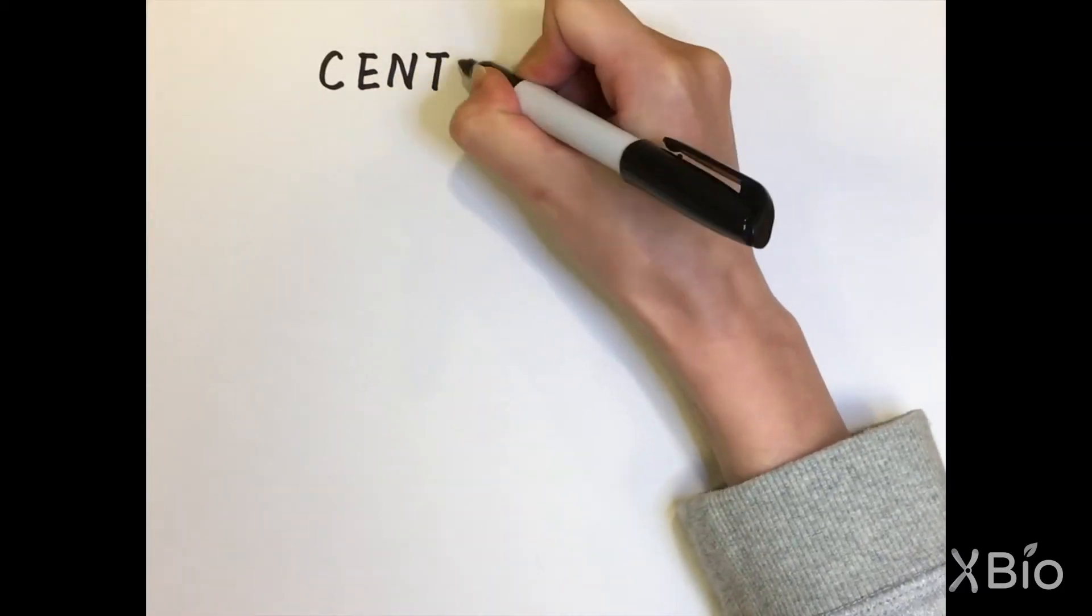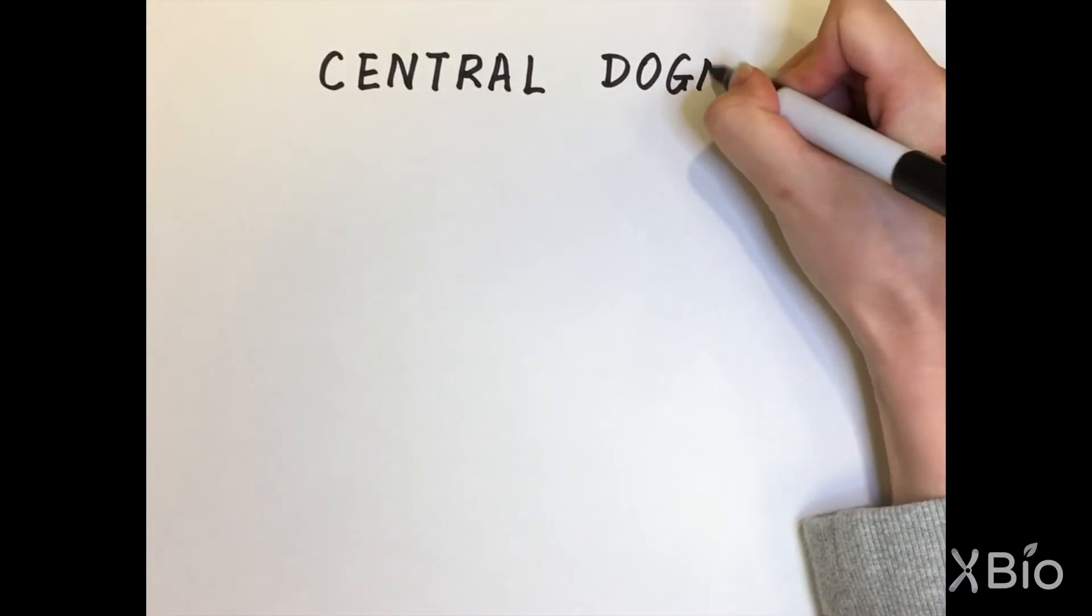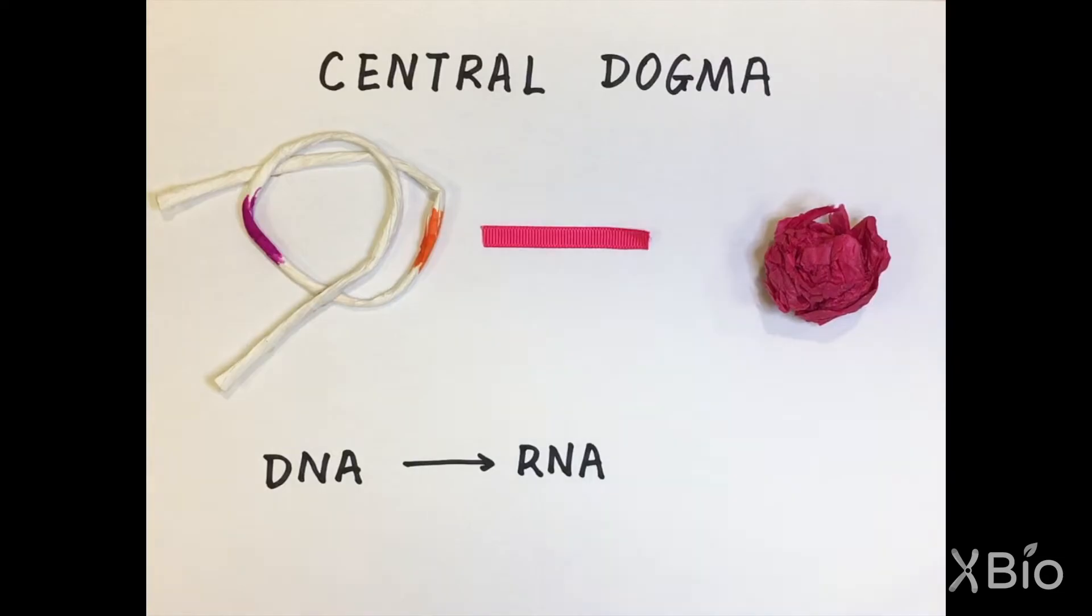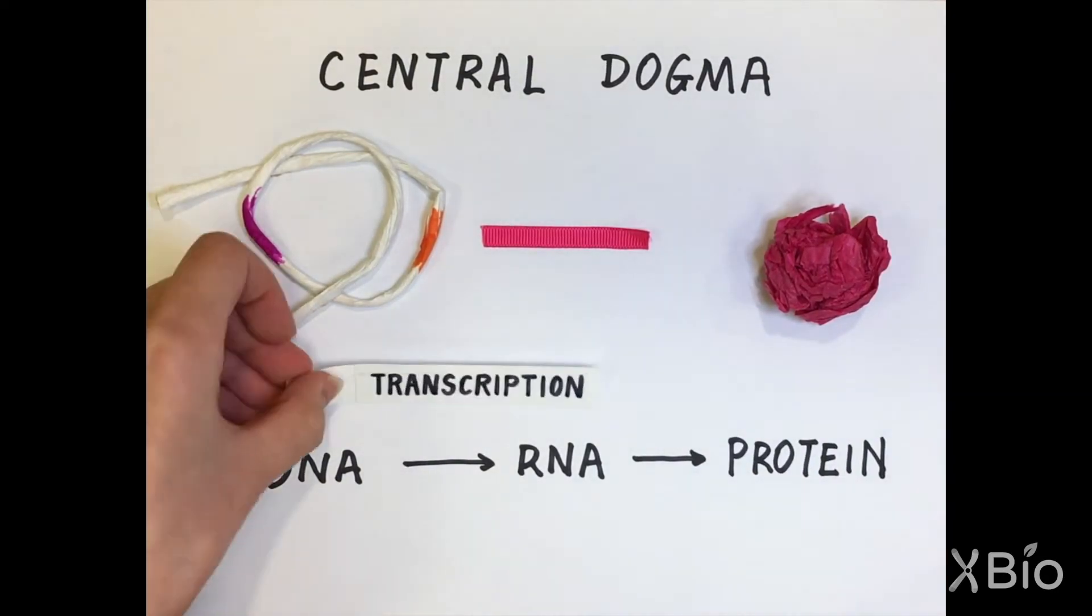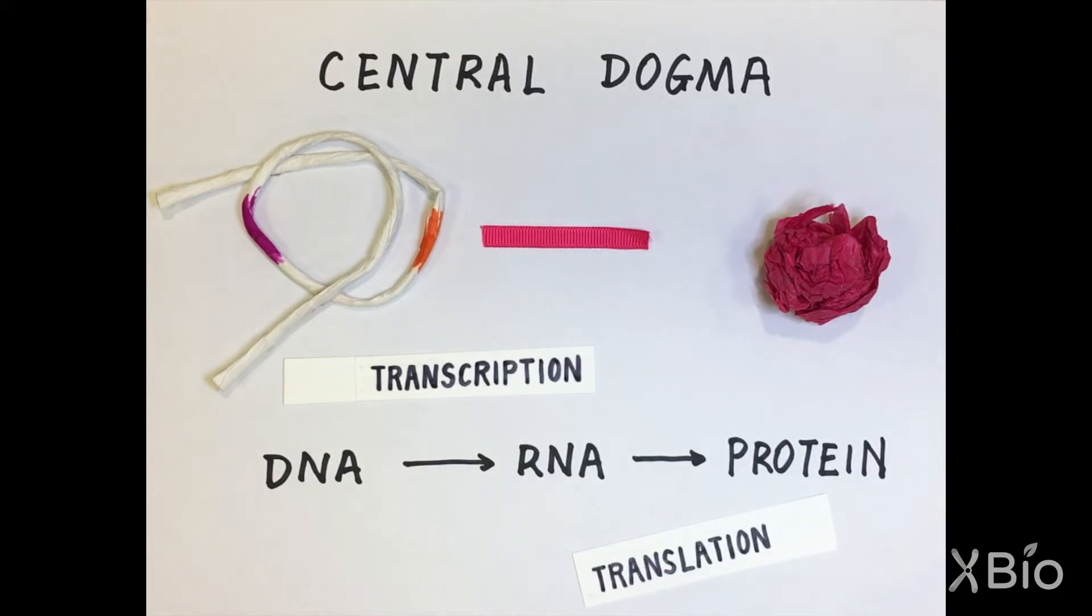So, in the central dogma of biology, we say that information flows from DNA to RNA to protein. To learn more about how transcription and translation work, click here.